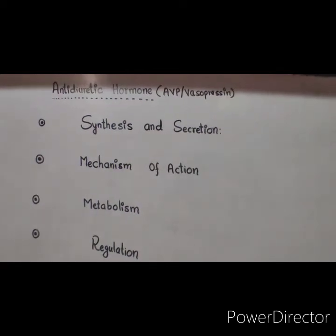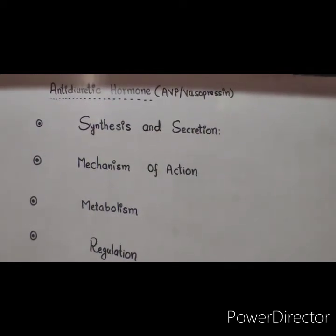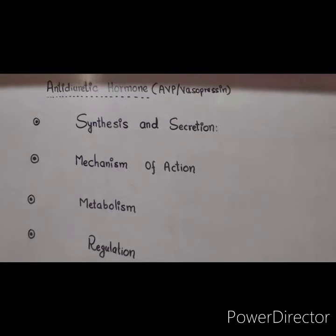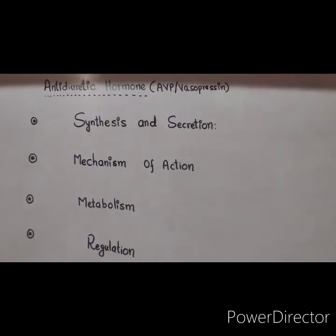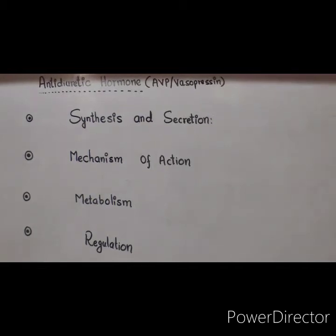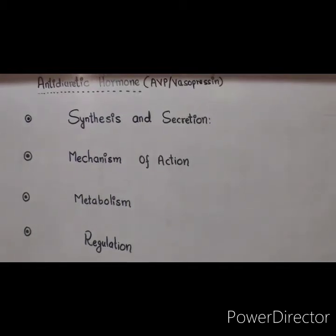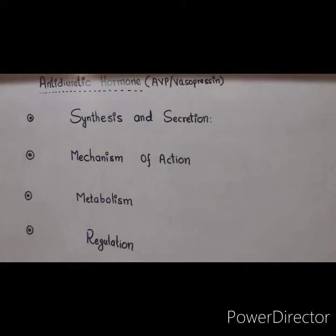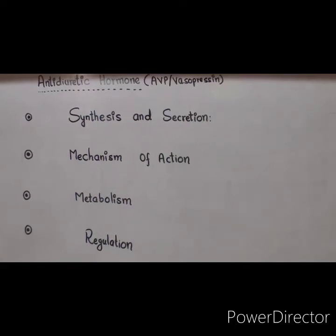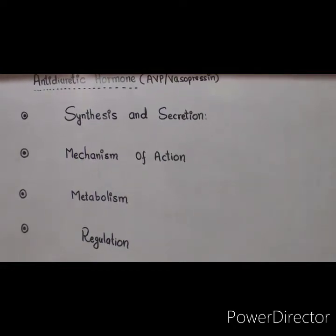In this video I am describing antidiuretic hormone, also known as arginine vasopressin or vasopressin. Deficient production of this hormone or unresponsiveness to it causes diabetes insipidus. I will describe the synthesis and secretion of this hormone, its mechanism of action, its metabolism, and how it is regulated.